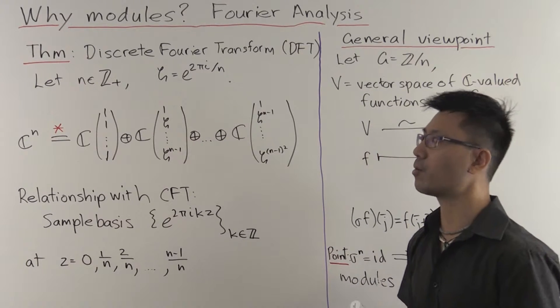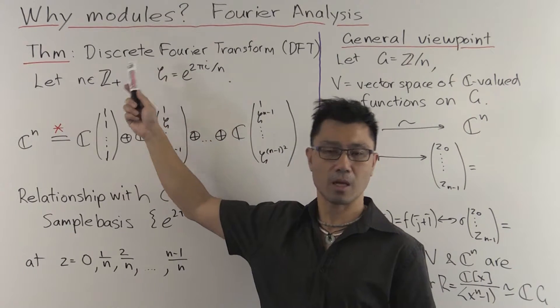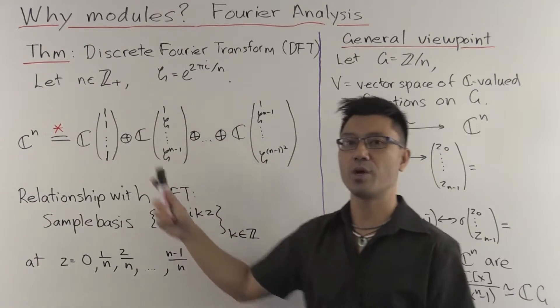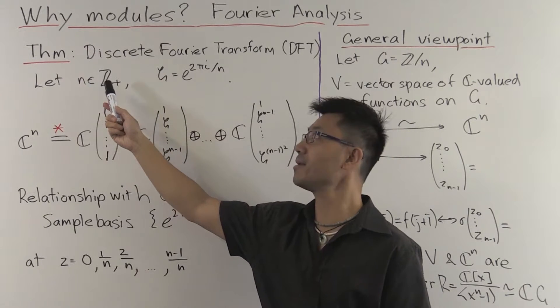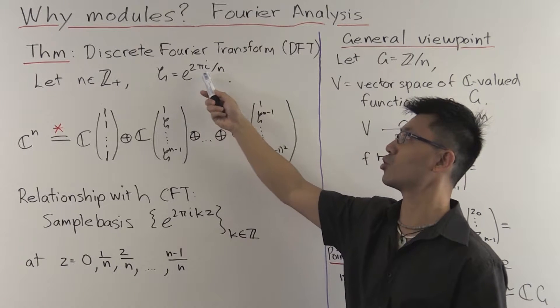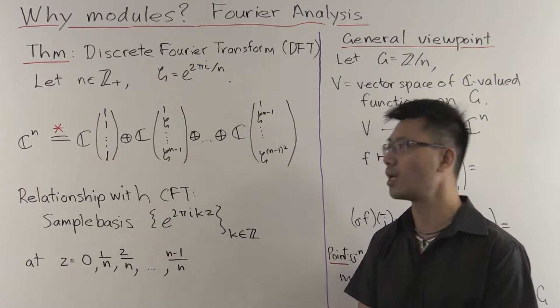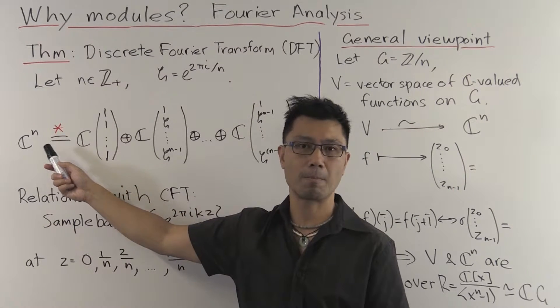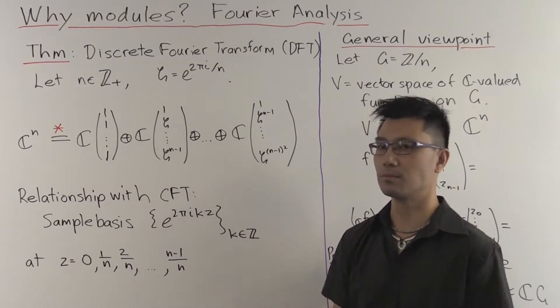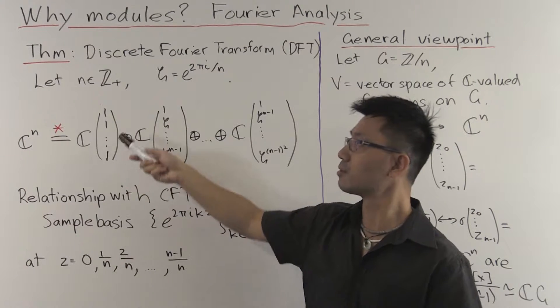And the way I'll do that is I'll begin by looking at the following theorem. This theorem is considered when you look at the discrete Fourier transform. So to begin with, we're going to start with a positive integer n, and we're going to look at the following primitive nth root of unity, e to the 2πi/n, which I denote by ζ. Then one way to describe the discrete Fourier transform is to say that we have the following basis for C^n given by these n vectors.